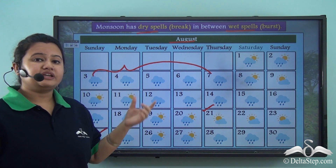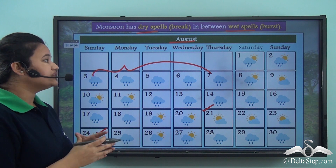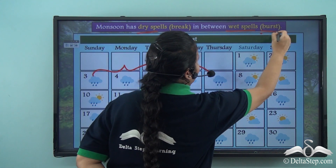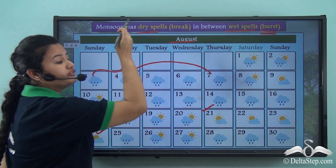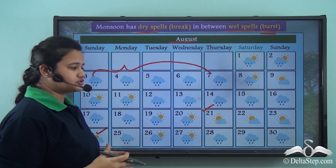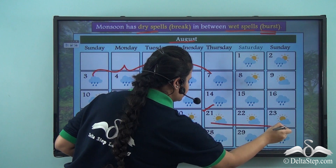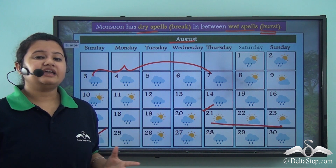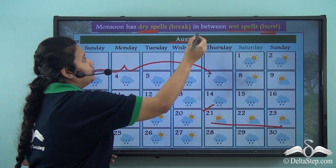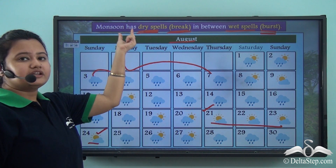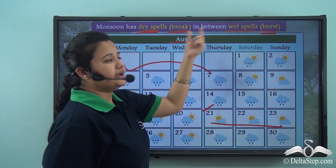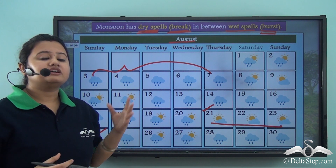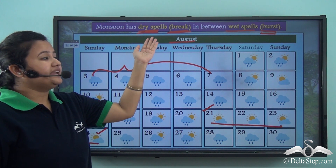The period when it rains heavily and torrentially for a span of 4 to 5 days is known as burst of monsoon — that is, the wet spell of Indian monsoon is known as burst of monsoon. Whereas when it does not rain at all for a span of 4 to 5 days and we see a clear sky, it is known as a dry spell or break in monsoon. So break refers to the dry spell, whereas burst refers to the wet spells. An important feature of Indian monsoon is that rainfall occurs at the intervals of dry and wet spells.